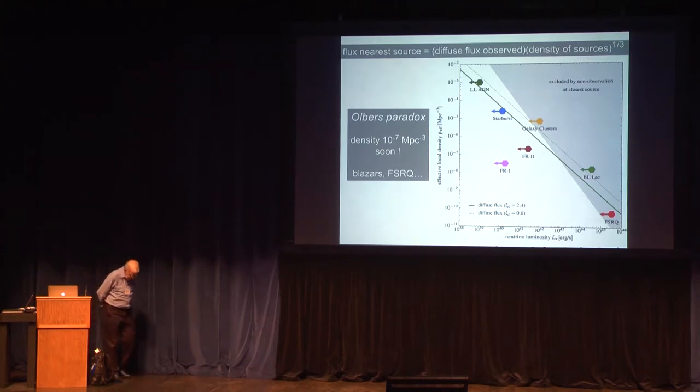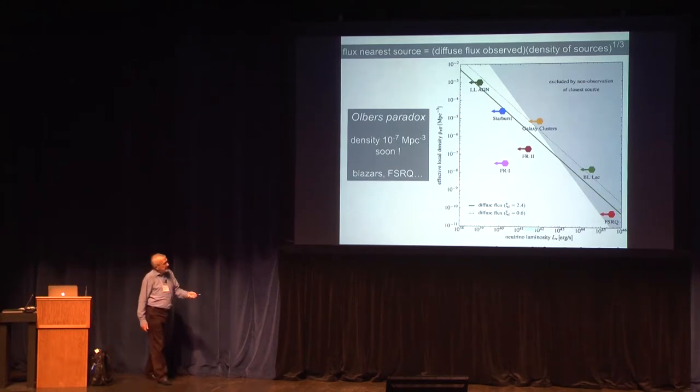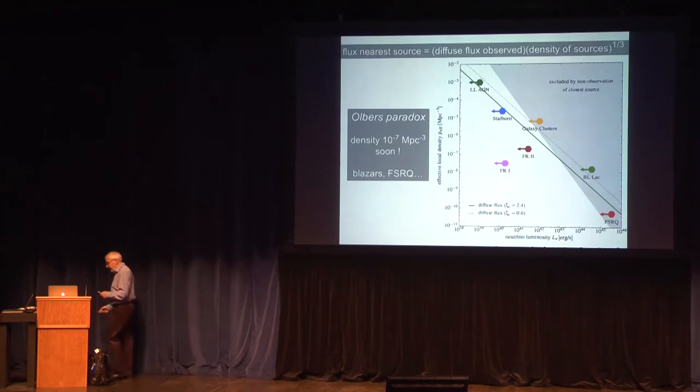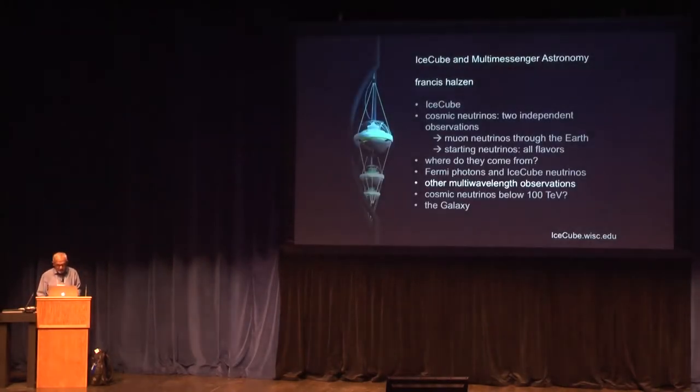One word about Olber's paradox. Clearly from this discussion it's clear that we haven't identified point sources, but we know the diffuse flux. And the fact that you don't see point sources rules out a certain density of the sources. That's Olber's paradox. The flux of the nearest source is the diffuse flux times the density to the one-third of the sources in the cosmos. So if you look at the borderline, it means that we are about to rule out... on the borderline you see blazars, you see flat spectrum radio quasars, galaxy clusters. So the optimistic way of looking at this slide, if any of these sources are the sources we should see them soon as point sources. So stay tuned.